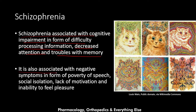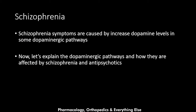Schizophrenia is also associated with negative symptoms in the form of poverty of speech, social isolation, lack of motivation, and inability to feel pleasure. So schizophrenia involves positive symptoms, negative symptoms, and cognitive impairment. Schizophrenia symptoms are caused by increased dopamine levels in certain dopaminergic pathways, and that is what antipsychotics target — they block dopamine so the patient returns to normal.